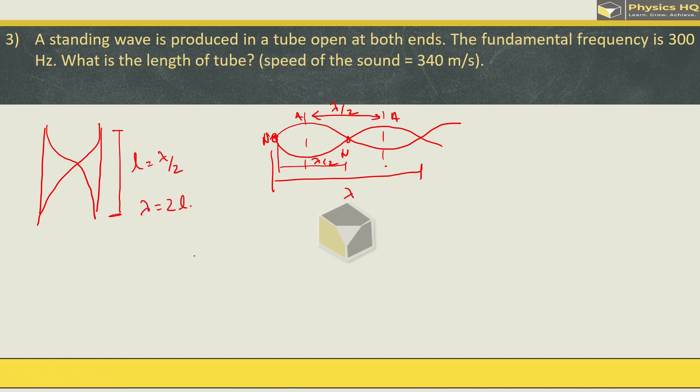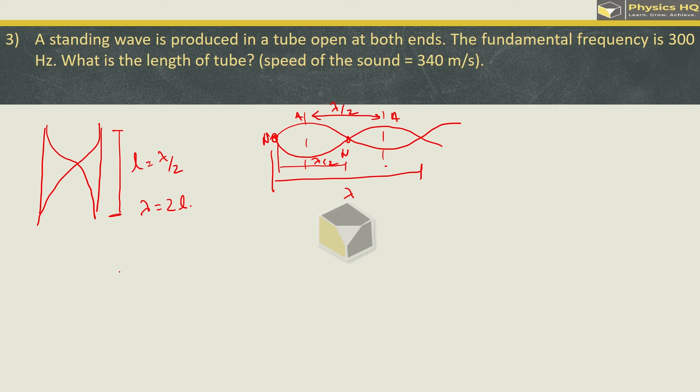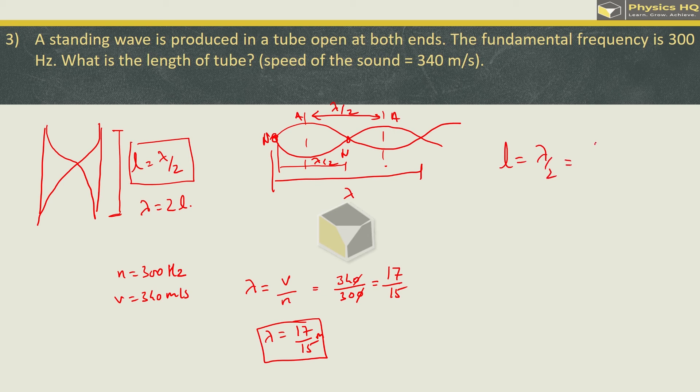Now they have given the fundamental frequency as 300 and they have also given the speed as 340 meter per second. So we have the wavelength. Lambda is equal to V by N in this case. So this will be equal to 340 by 300. This will give 17 upon 15. This is lambda. So we got lambda is 17 upon 15 meters. Now we can put it in this equation to get length. So we will have length equal to lambda by 2, which is 17 upon 15 by 2, or 17 upon 30. If we divide this we will get something around 0.566 meter. I hope you understand. Next one we will see.